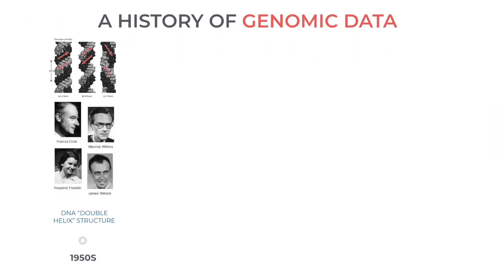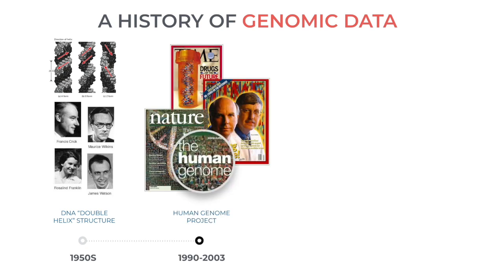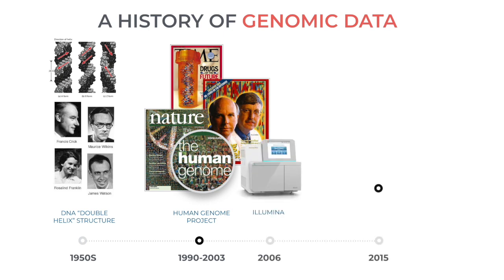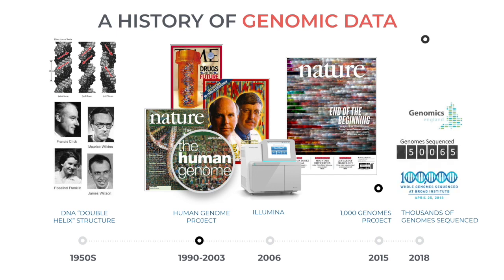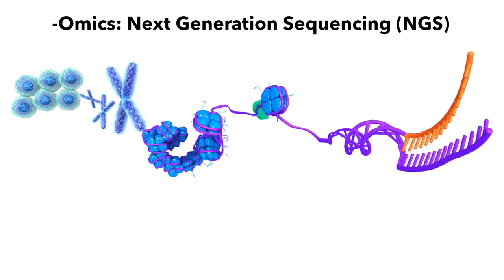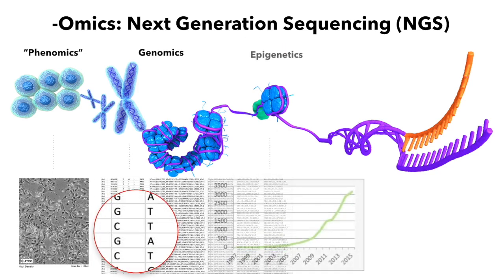The year 2020 marks the 70-year mark since the discovery of the structure and function of the DNA molecule. By 2015, the 1000 Genome Project brought a significant number of whole genome sequences to the research community. And in 2018, over 100,000 whole genomes were sequenced. Today, there is an ever-increasing number of genomic, transcriptomic, proteomic, and metagenomic datasets available that describe subcellular processes with highly detailed digital data.